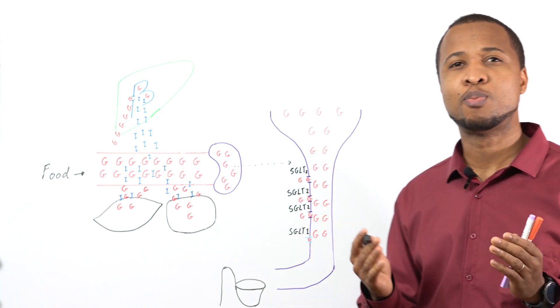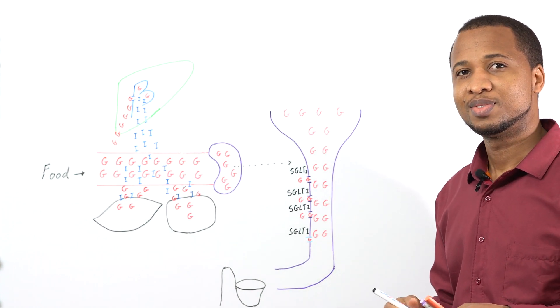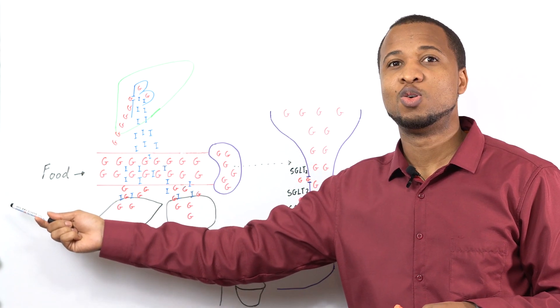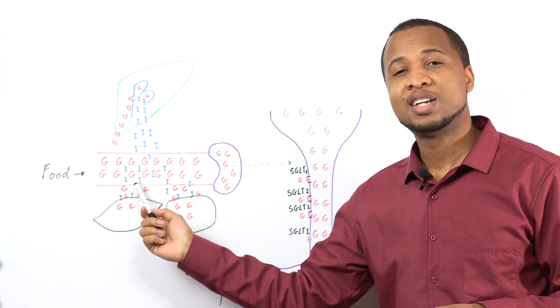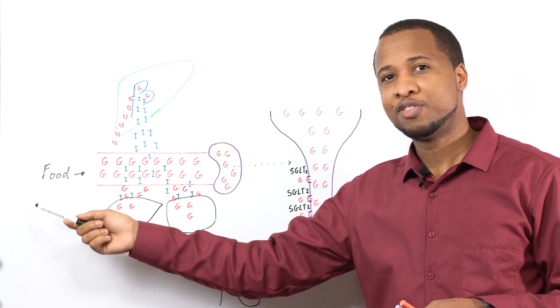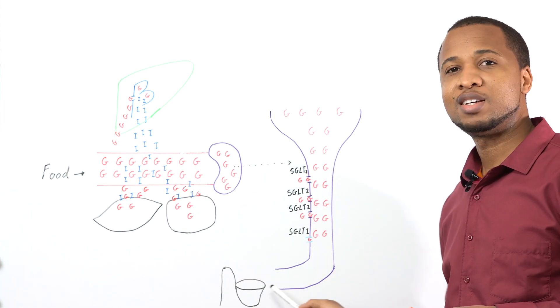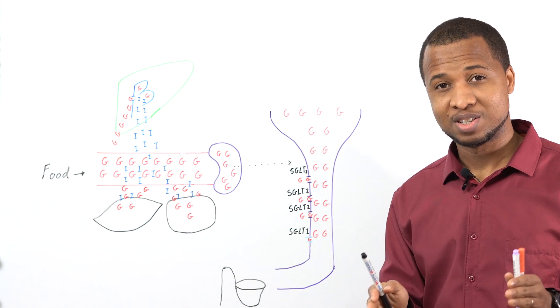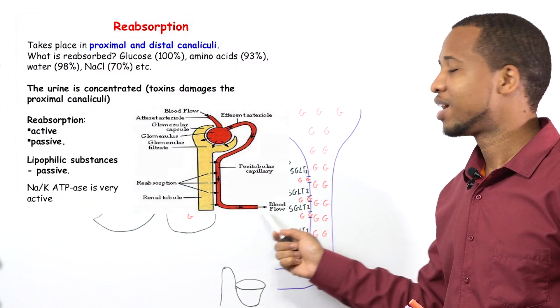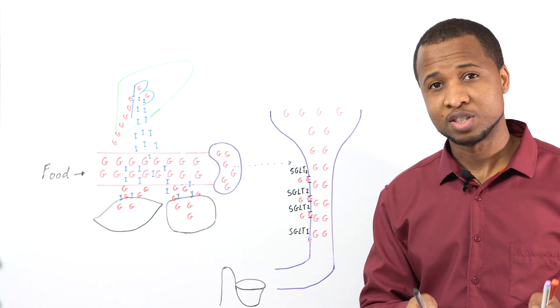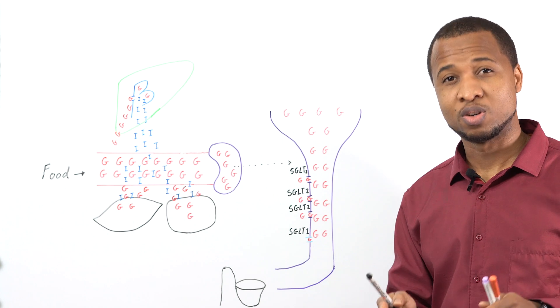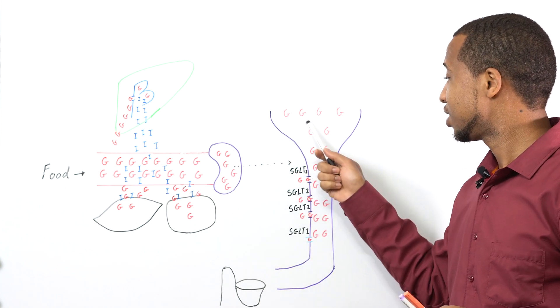Now I might ask you, do you think glucose is important to the body? Well I hope you said yes, because you are buying glucose. The body doesn't make glucose from air, you are buying glucose. So you don't want to be wasting top dollars buying food to just realize that your kidneys are throwing all of them in the toilet. So glucose is very very important and all of it will be taken back to your body. So in normal situation you can't find glucose in the urine because it's important, it's on the VIP list.